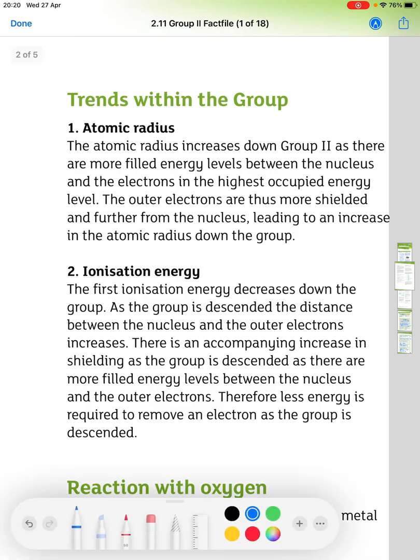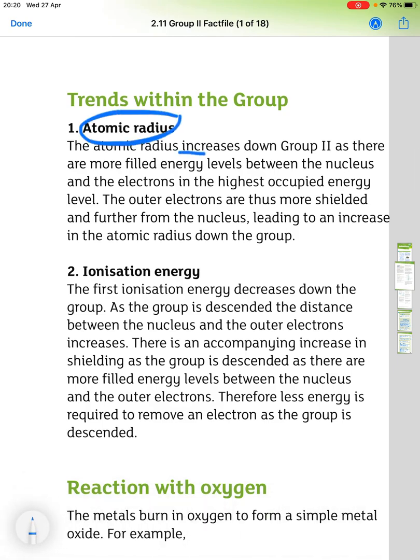Next, the trends within the group. So atomic radius increases down the group as there are more filled energy levels between the nucleus and the electrons in the highest occupied energy level. So the outer electrons are more shielded and further from the nucleus. This leads to an increase in the atomic radius down the group.